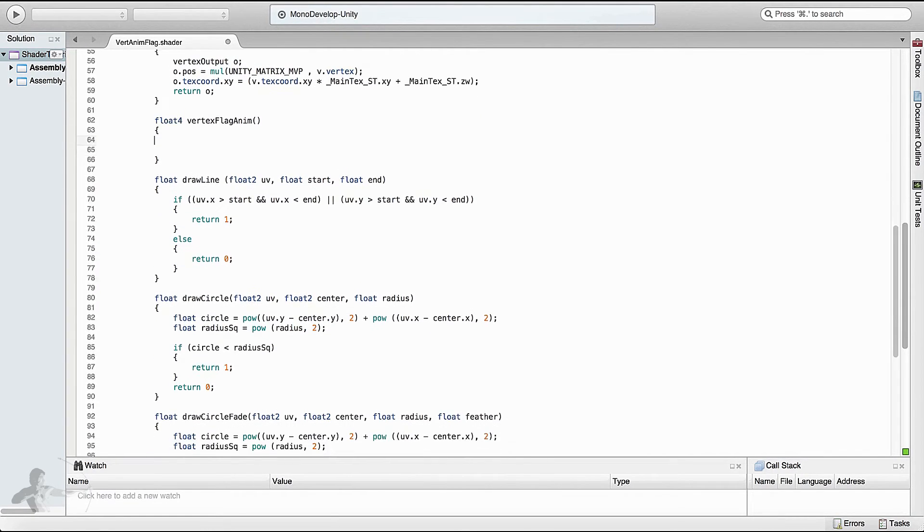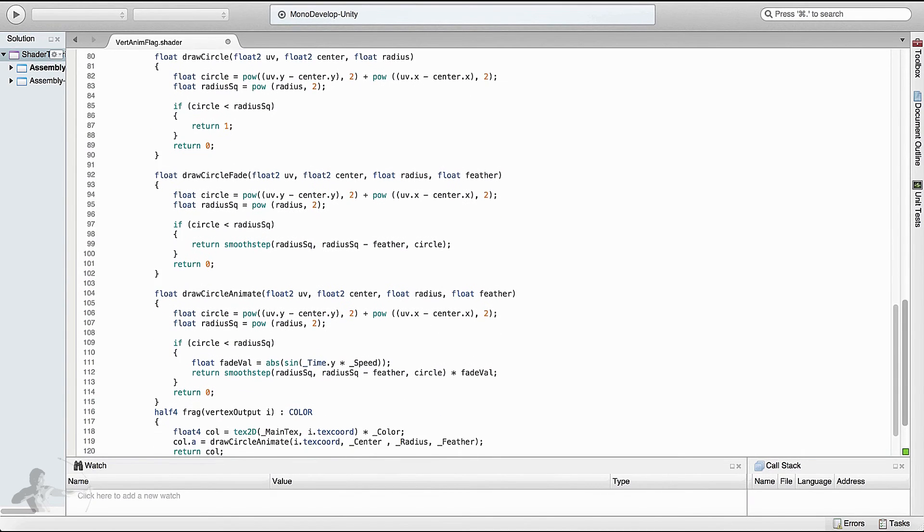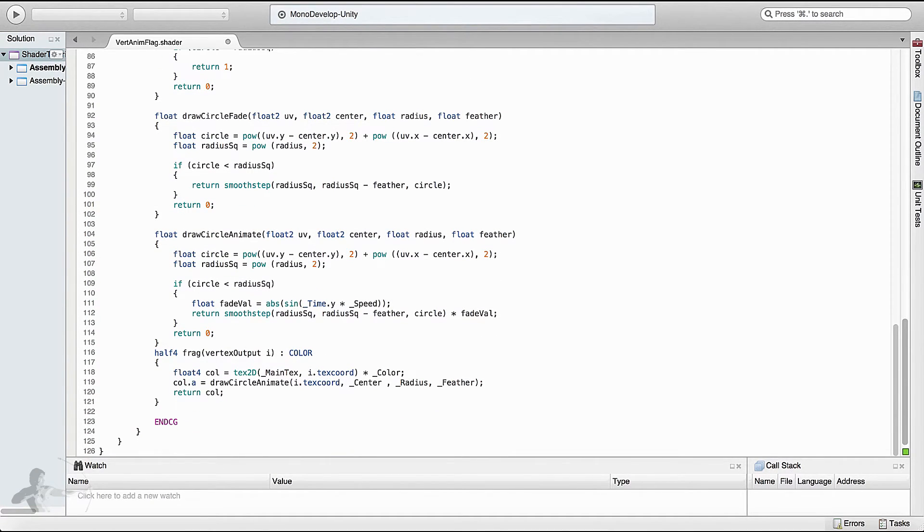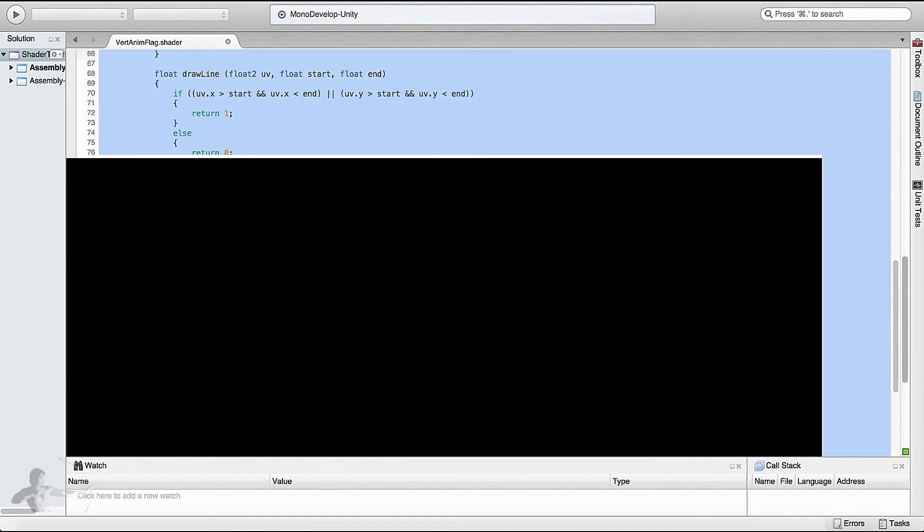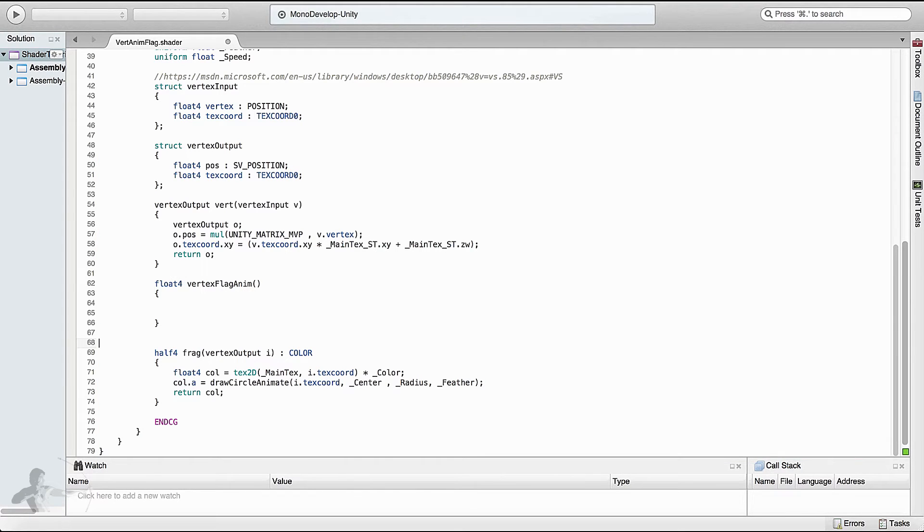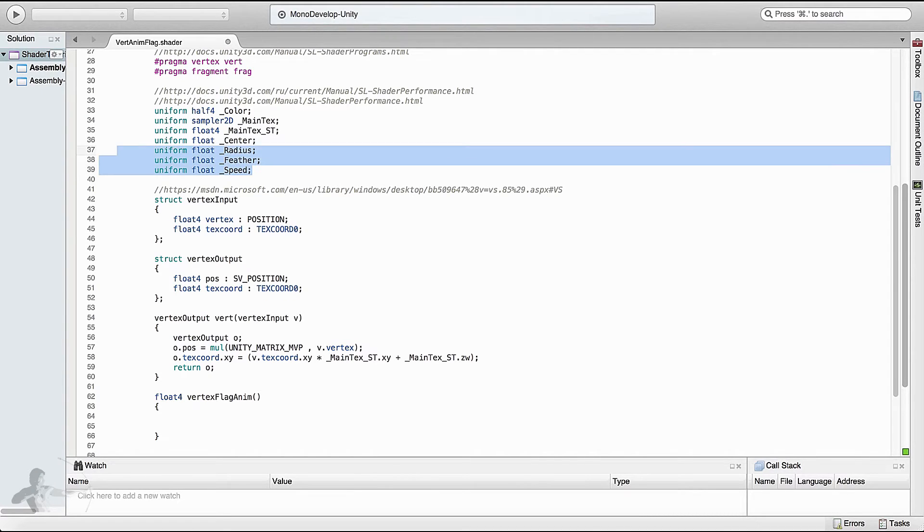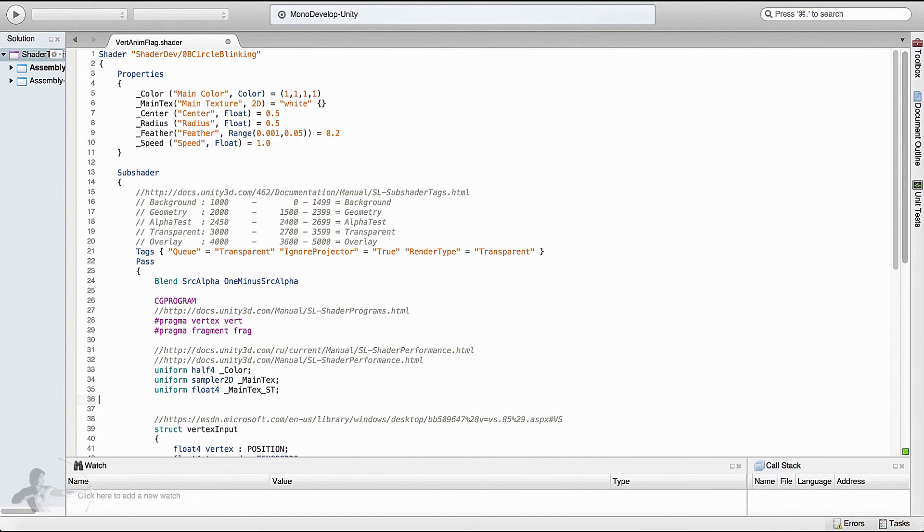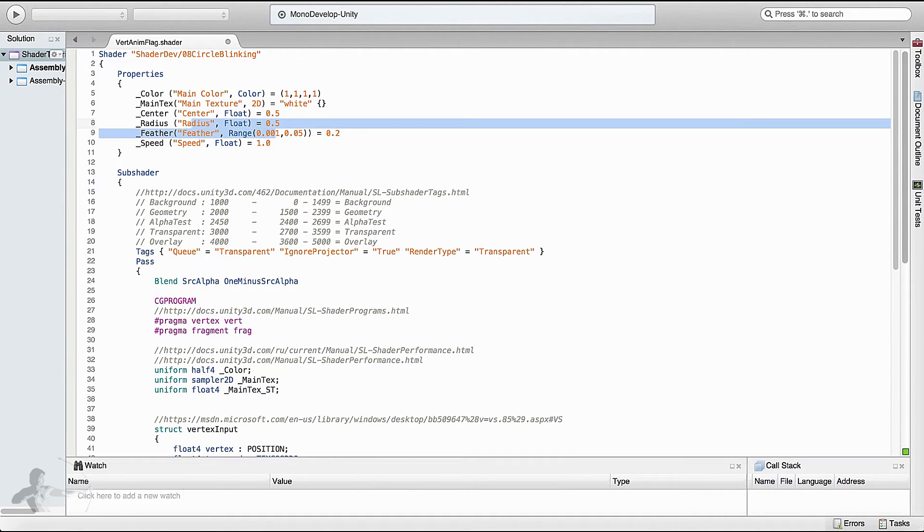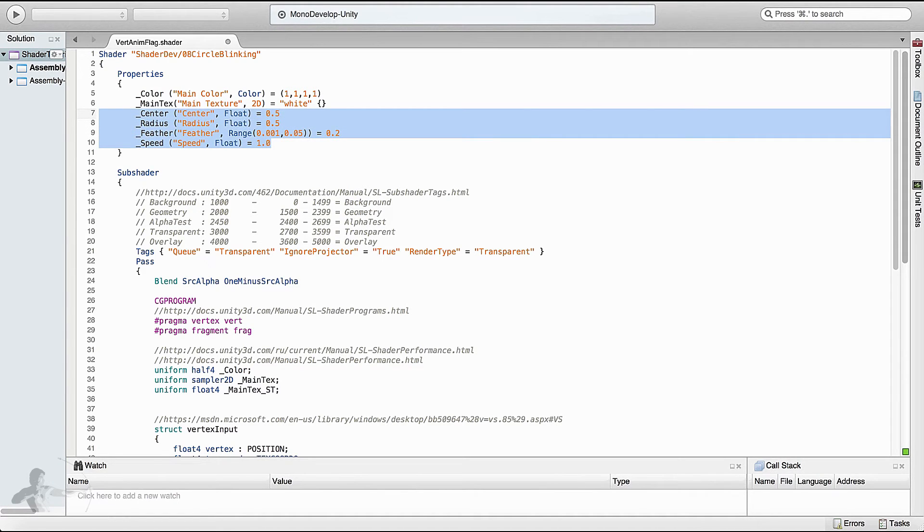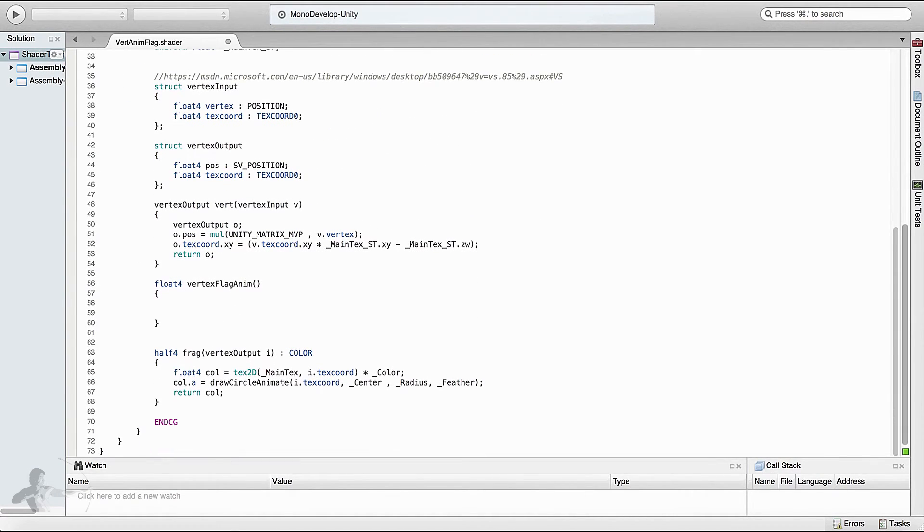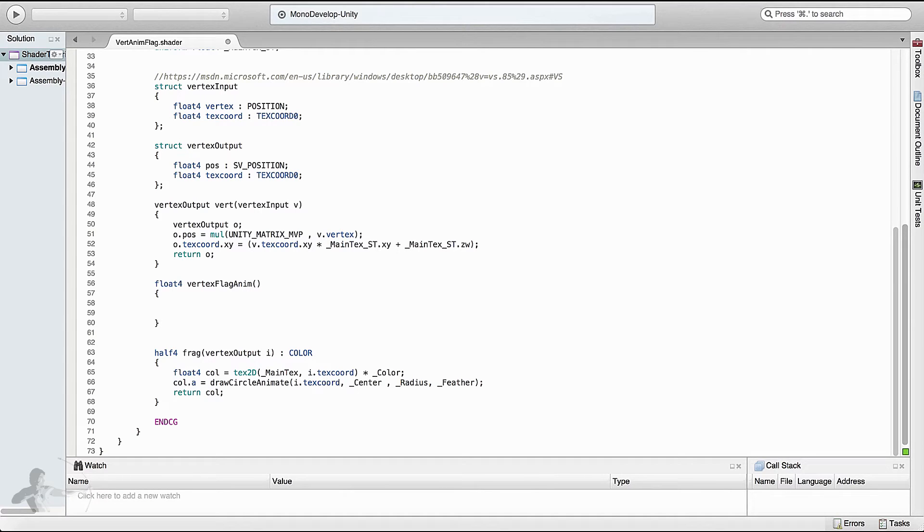I will also clean up the shader because we are not doing anything with the patterns in this function. I will take all these circle functions and delete them. I will also be removing the parameters and the properties. It's a bit more clean shader and I will comment out this line for now.